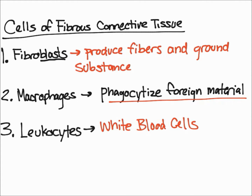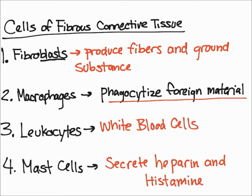The next type of cell are leukocytes, also known as white blood cells. These cells enter the connective tissue from the blood and move throughout the bloodstream. Leukocytes look for bacteria and antigens and can respond to them. They are found in fibrous connective tissue.